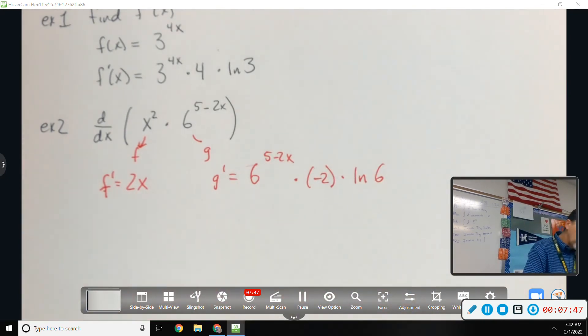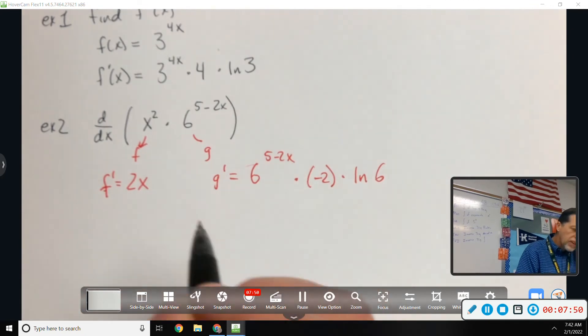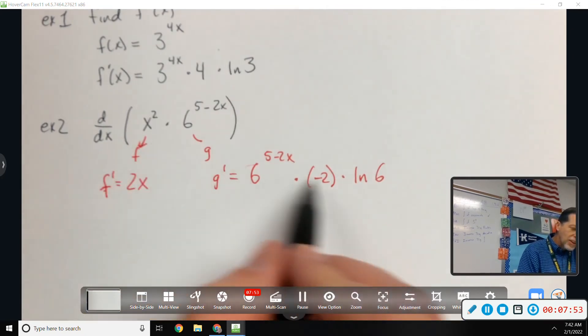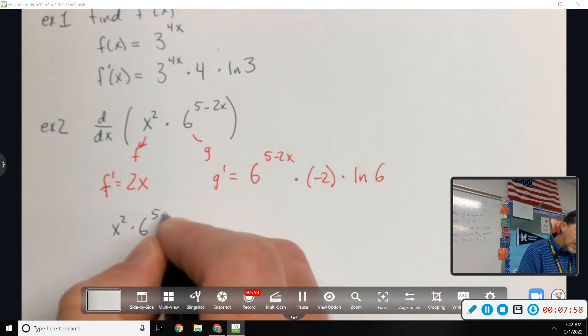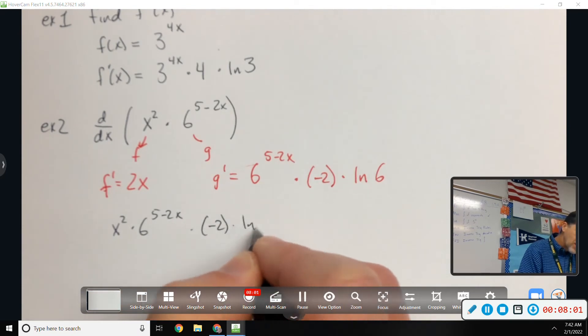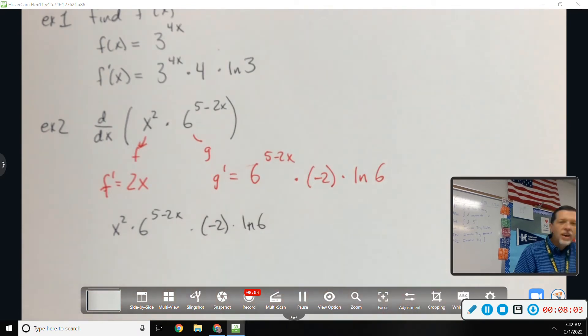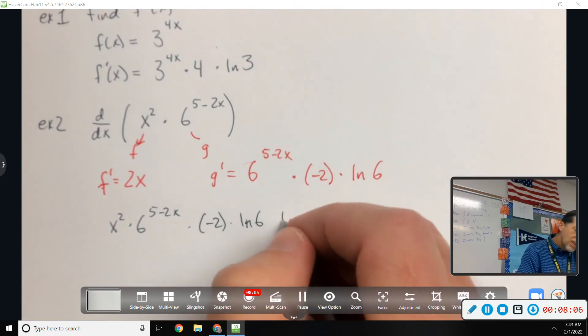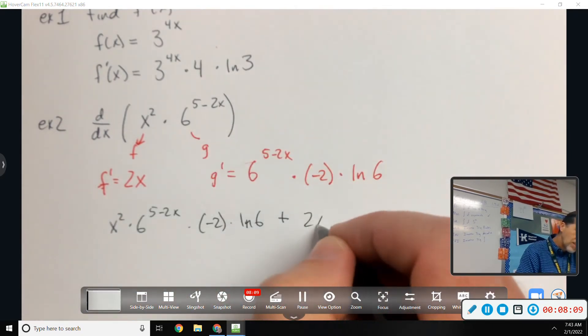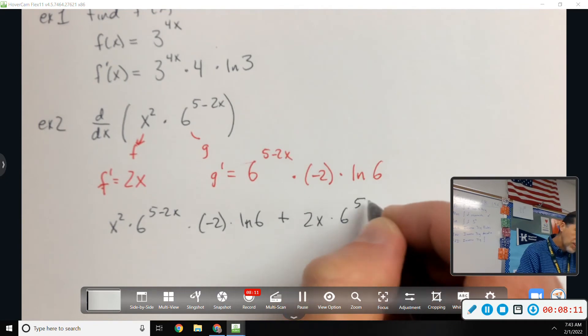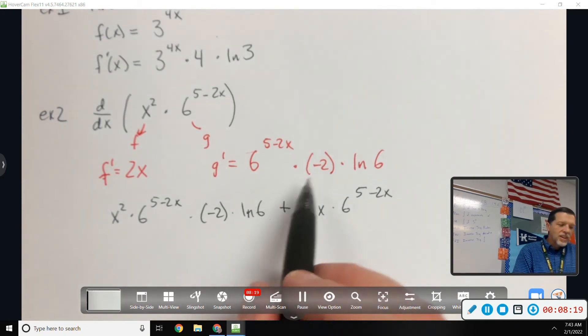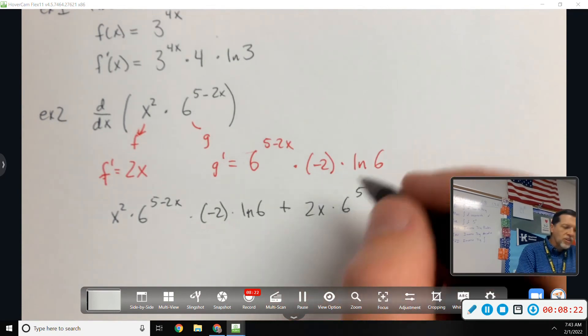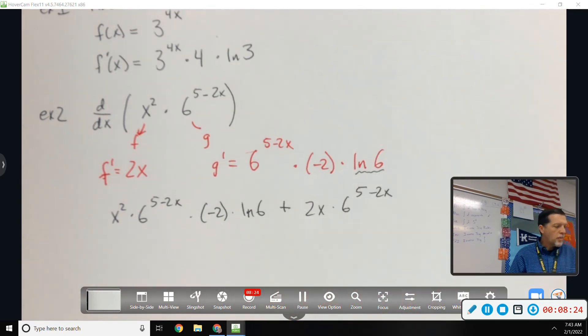Okay, so that was the new stuff. The old stuff was product rule. So F times G prime, that's going to be a mess. I'm not sure what the best order to write all that is in, but as long as we get it all. F G prime plus the other way, 2X times 6 to the 5 minus 2X. So a little bit messy because chain rules, that chain rule is always there, but this extra multiplied by the natural log of the base.